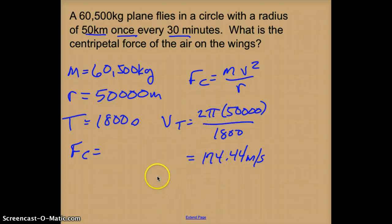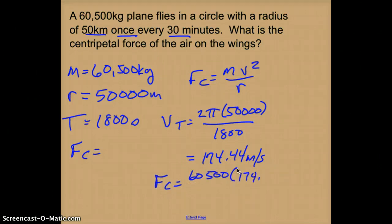So now I can plug that in for my centripetal force, so I have everything else. So my mass is 60,500, my velocity 174.44 squared, divided by my radius, which is 50,000.